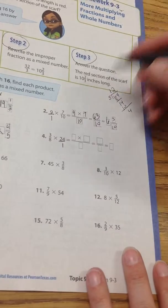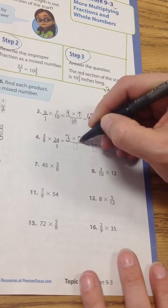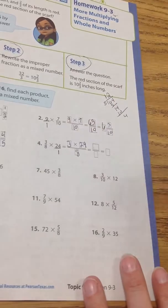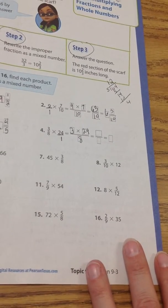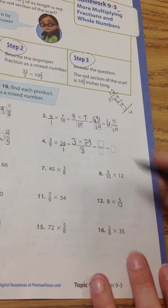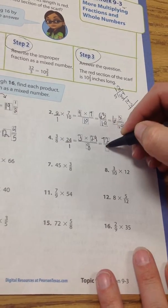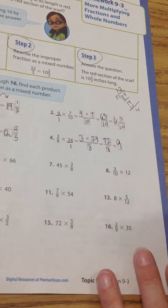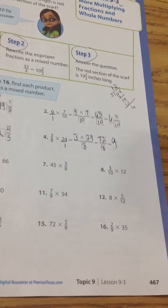put the whole number over 1, multiply the two denominators together. 24 times 3 equals 72 all over 8. And this one does go evenly right into it, which would be 9.